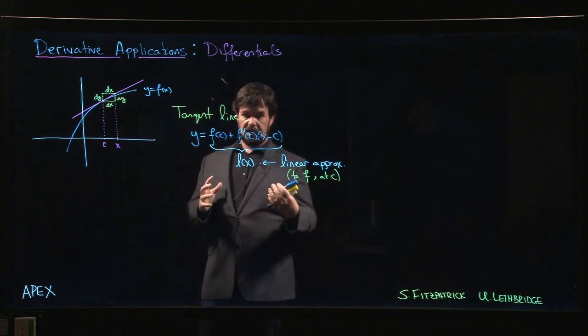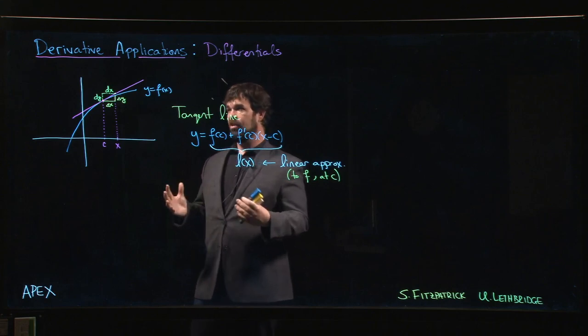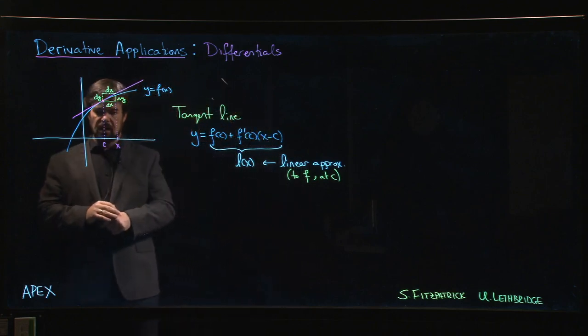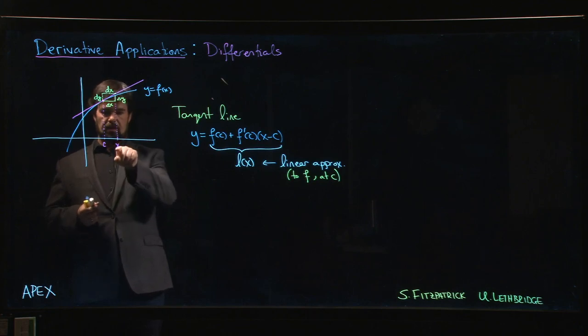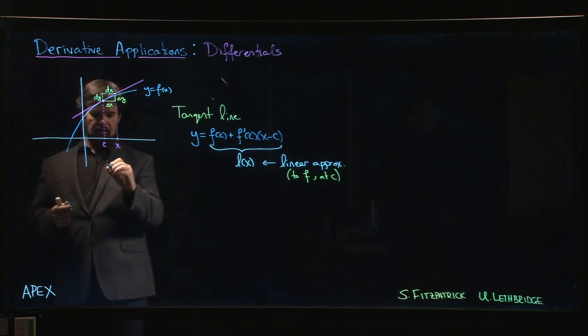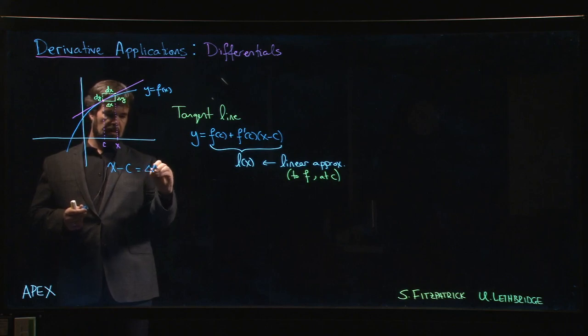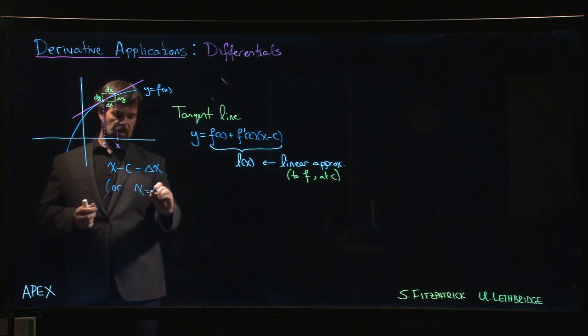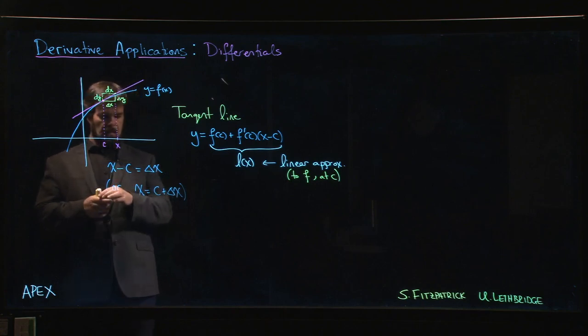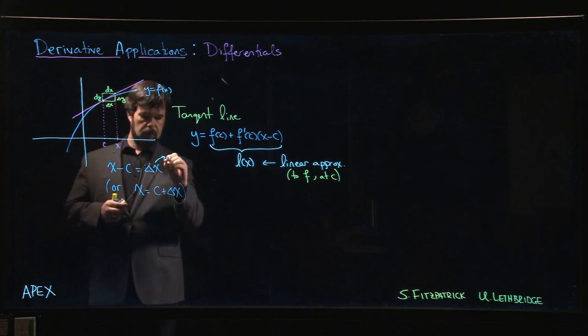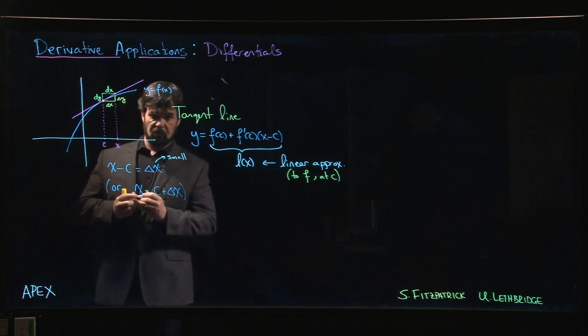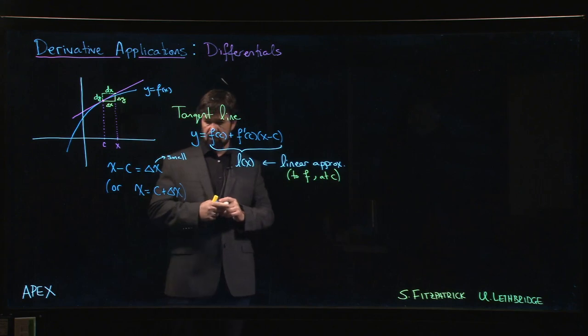What we're going to look at now is using this tangent line approximation to model the change in a function. We're going to look at a point x which is close to a point c. What you want to have in mind here is that x minus c is some amount delta x, or another way to say it is that x could be written as c plus delta x. We want to think of this delta x here as some small quantity.